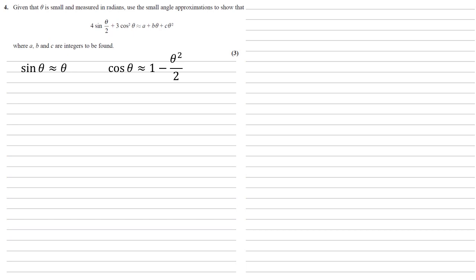Putting these into the left-hand side of what we have above, we would get 4 times θ/2 for the sine, and 3 times the square of (1 - θ²/2) for the cos squared.